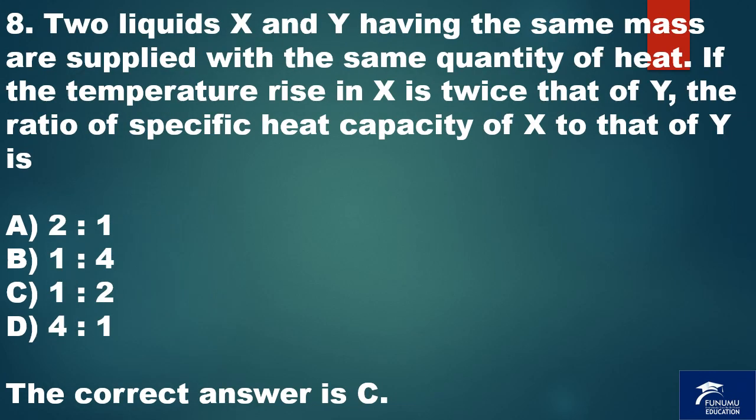Question 8. Two liquids X and Y having the same mass are supplied with the same quantity of heat. If the temperature rise in X is twice that of Y, the ratio of specific heat capacity of X to that of Y is A. 2 is to 1. B. 1 is to 4. C. 1 is to 2. D. 4 is to 1. The correct answer is C.